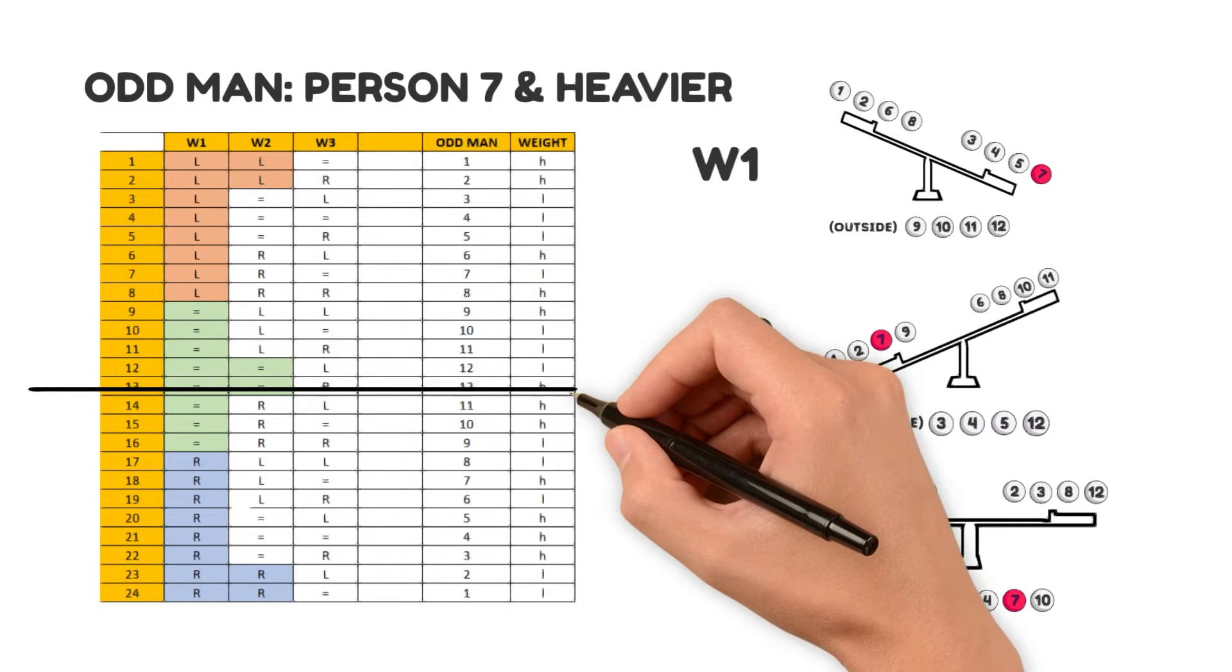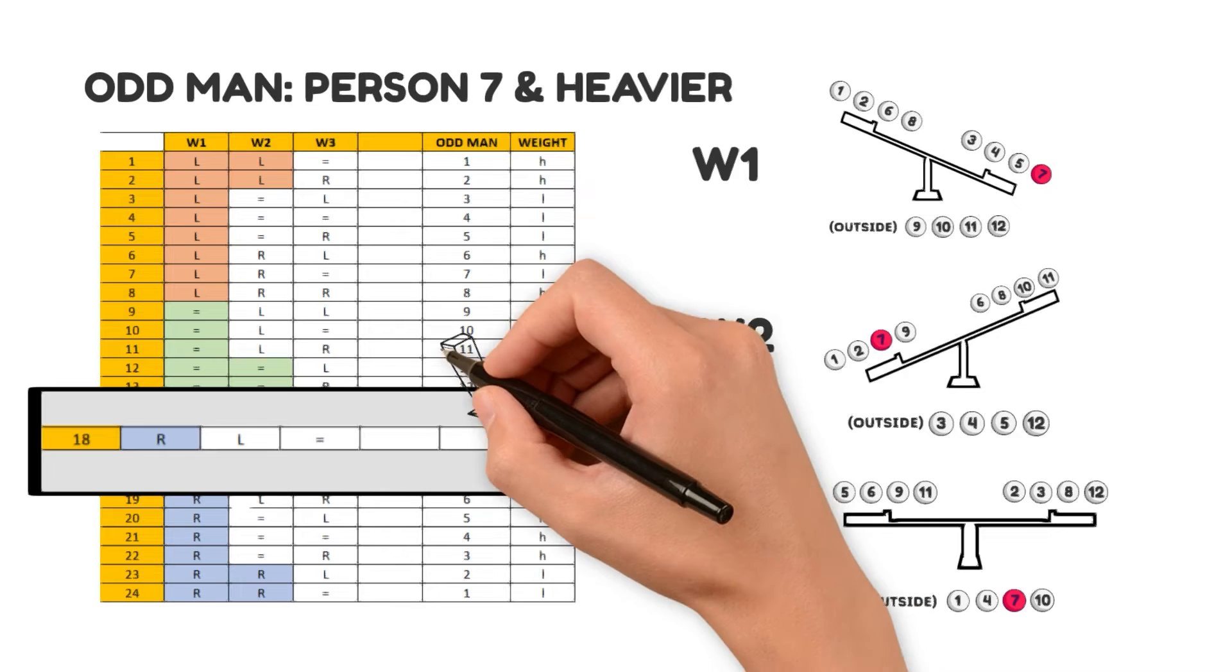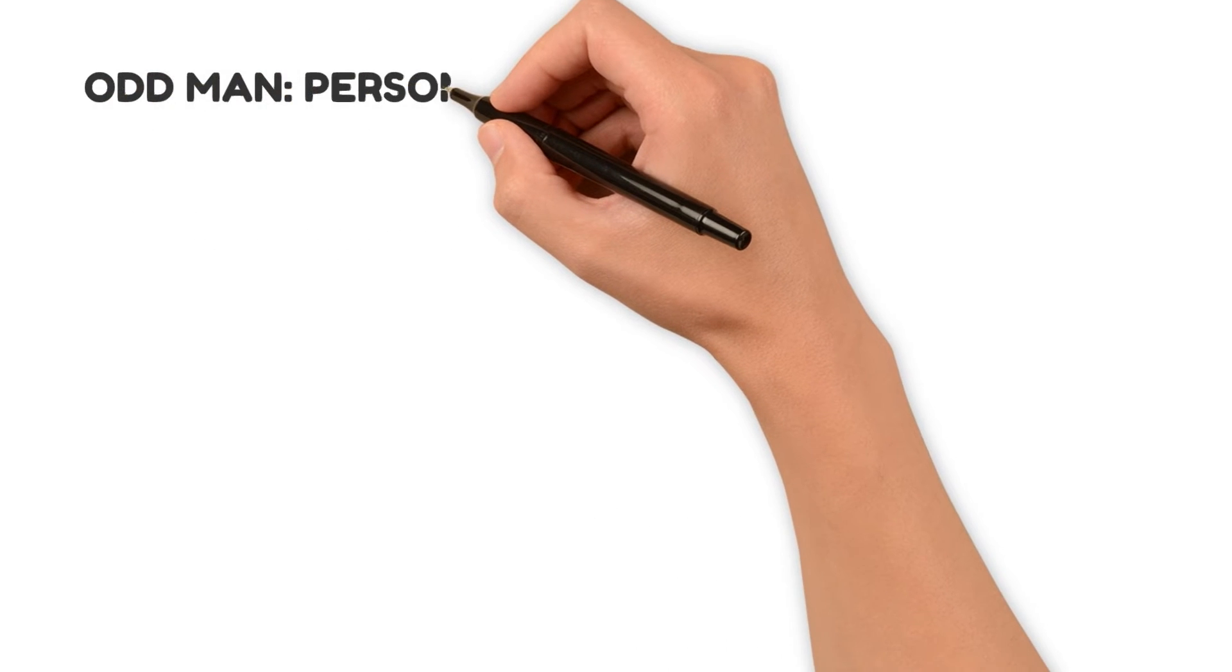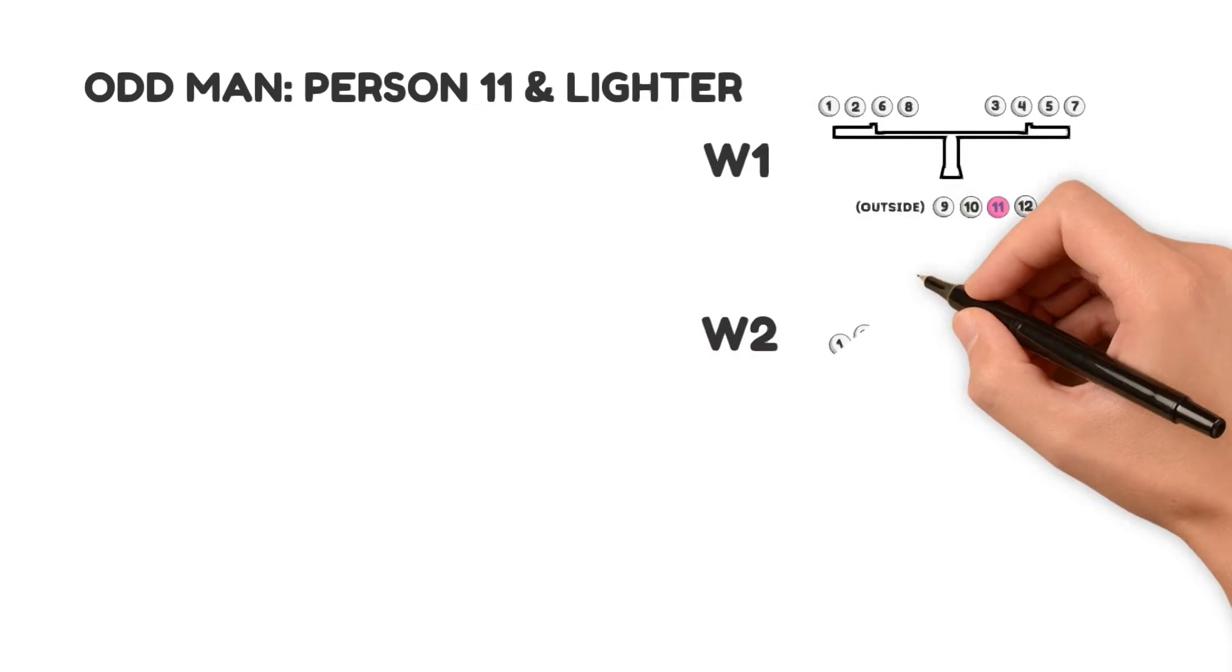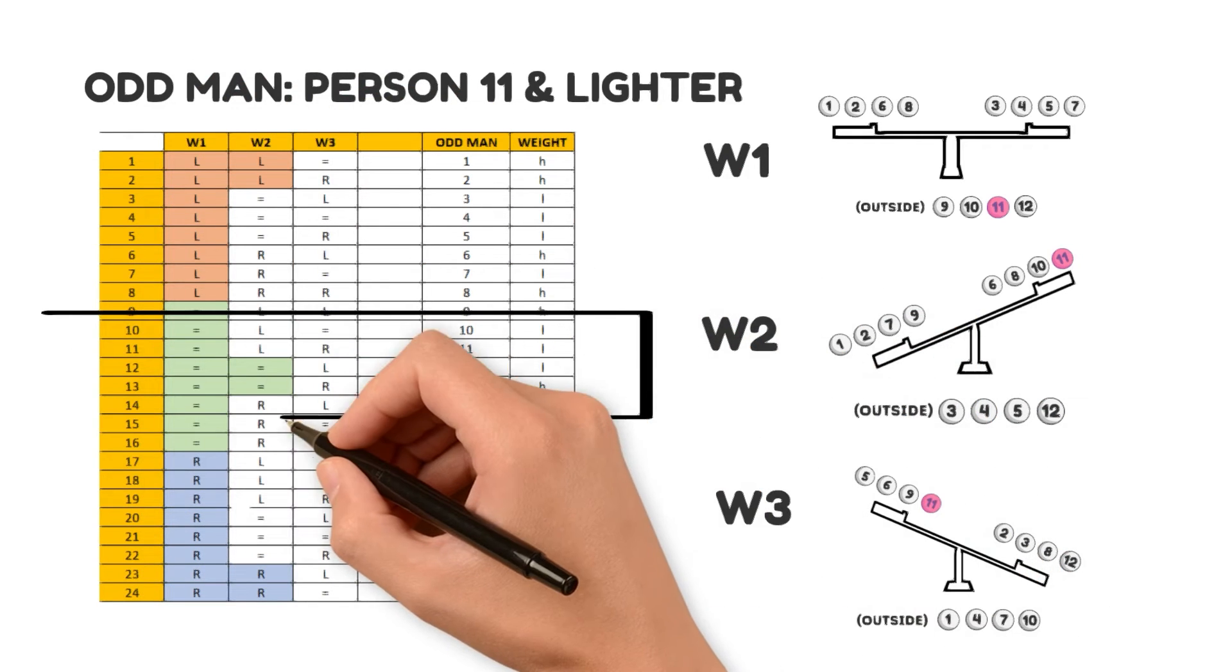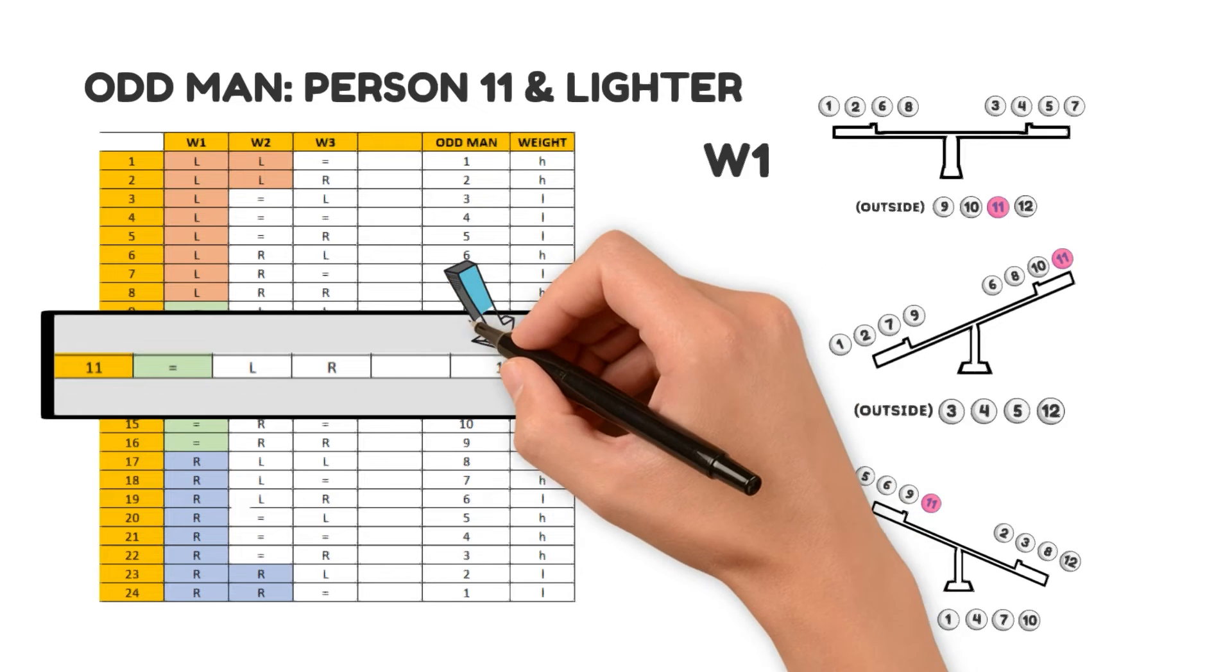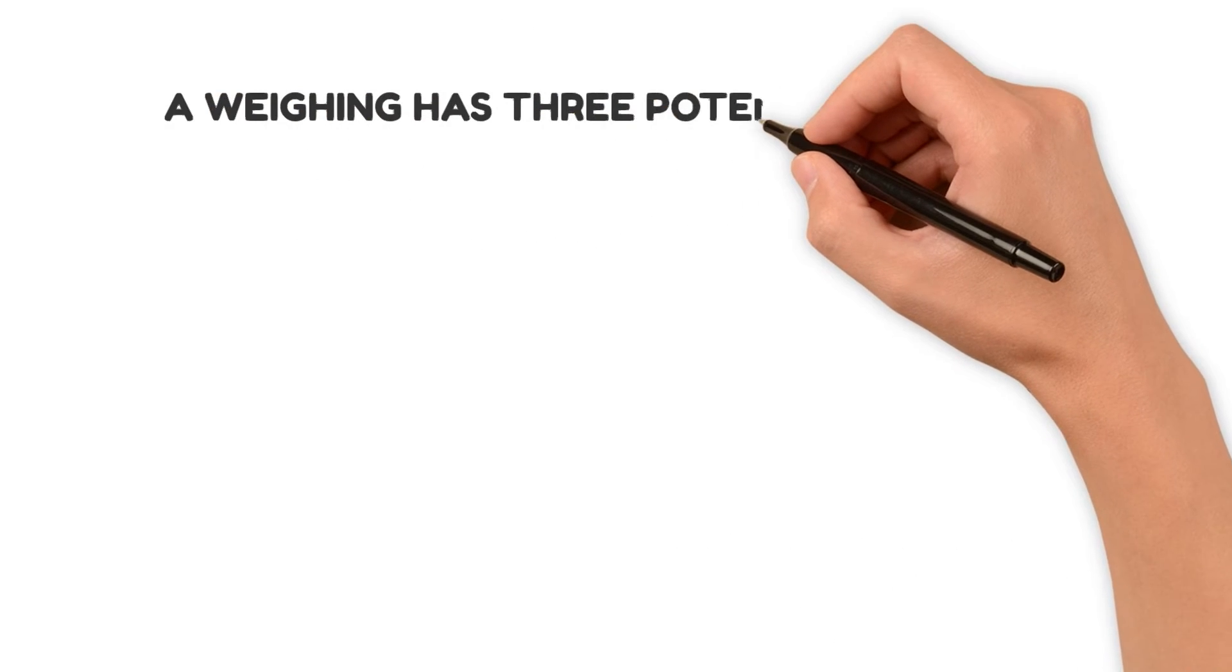So if you check the table for the combination R L equal, it should point to the correct odd man. As you can see here, person 7 is the odd man and the letter H indicates he's heavier. Here's another scenario. Let's say the odd man is number 11 and he's lighter. In W1, he's outside, so the seesaw is balanced. In W2, he's on the right and lighter, so the weight shifts to the left. In W3, the weight shifts to the right. So if you check the combination equal L R in the table, it should point to the correct odd man. As you can see here, person 11 is the odd man and the letter L indicates he's lighter. Our solution perfectly identifies the odd man and whether he's heavier or lighter based on the outcomes of the three weighings.